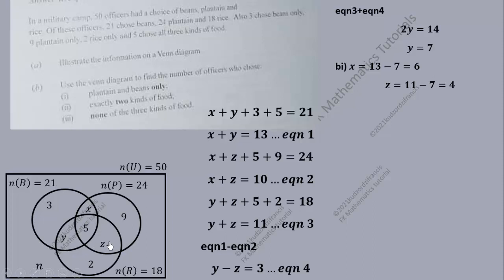Now that we have x, y, and z, we can answer the second question. The number who chose exactly two kinds of food is x plus z plus y — those regions representing exactly 2 choices. So exactly 2 = x + y + z = 6 + 7 + 4 = 17.